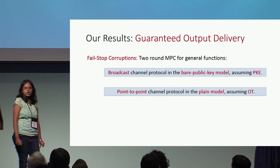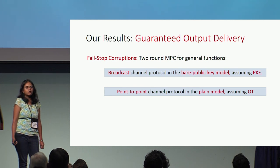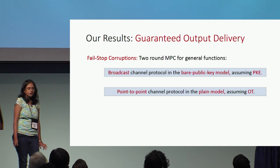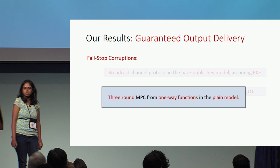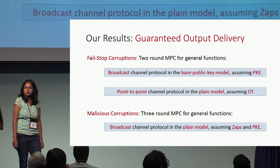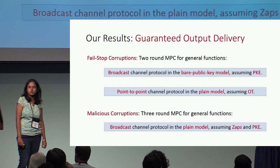For guaranteed output delivery, we get two-round protocols for general functionalities. We get a broadcast channel protocol in the bare public key model assuming public key encryption, and in the point-to-point channel case, a two-round protocol in the plain model assuming OT. Allowing an extra round, we get a three-round protocol secure against fail-stop corruptions in the plain model assuming only one-way functions. For malicious corruptions, we get a three-round protocol using broadcast channels in the plain model, assuming zaps and public key encryption.